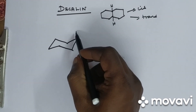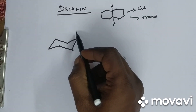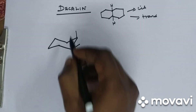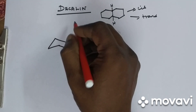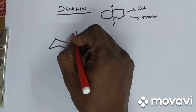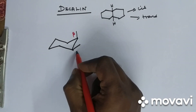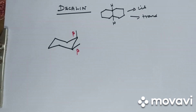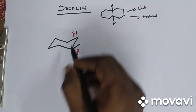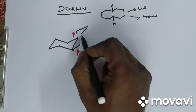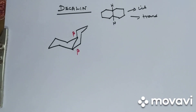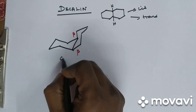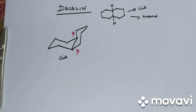Draw the methylene groups of the second ring. Look at this — this methylene group is beta and this methylene group is also beta. Both methylenes are beta. Draw the remaining part of the ring. Since both are beta — beta-beta — this is cis decalin.